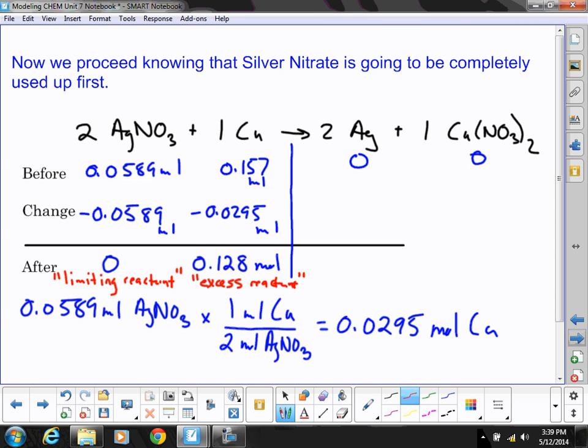Because I know that these two amounts, the 0.0589 and the 0.0295, that those amounts work for this reaction. I don't have any negative mass or negative moles left over. However, this is where I want to go. The limiting reactant is the thing that goes to 0. The excess reactant is the one that we have excess of, leftover of.